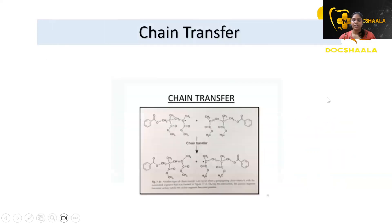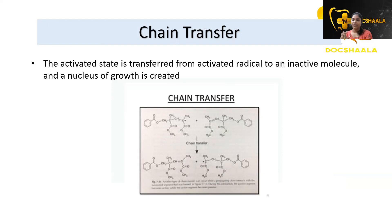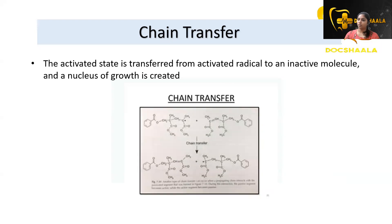Then comes chain transfer: the activated state is transferred from an activated radical to an inactivated molecule, and a new nucleus of growth is created. After propagation, although there is an activated state in the mixture, there are still inactive monomer molecules. The activated state is transferred to those inactive molecules and growth is propagated again — it is a transfer of activation. That is chain transfer.